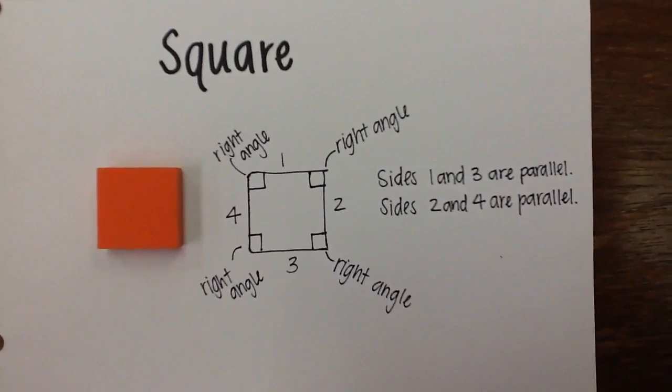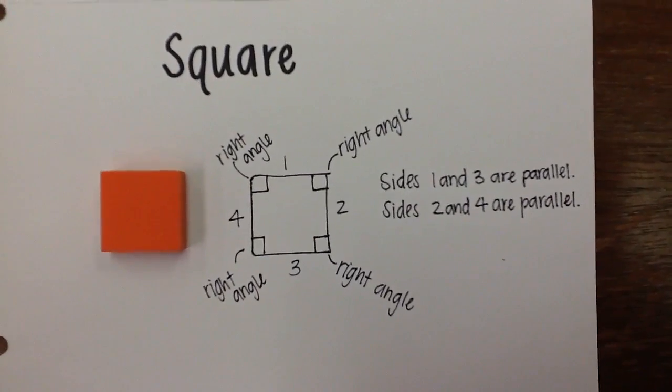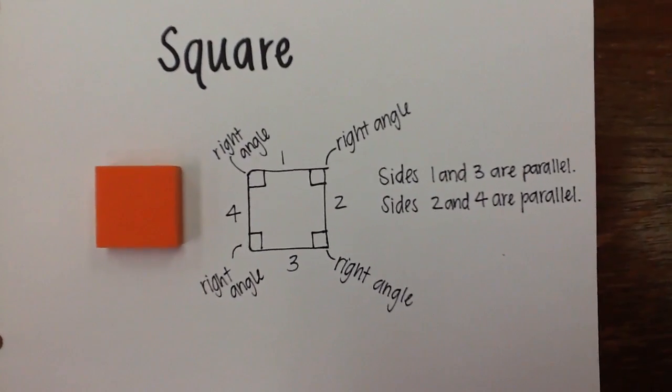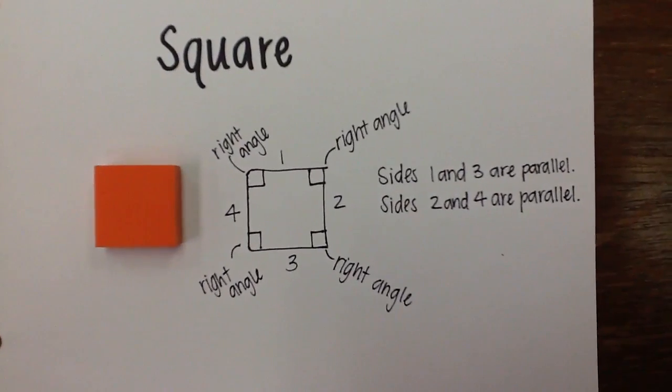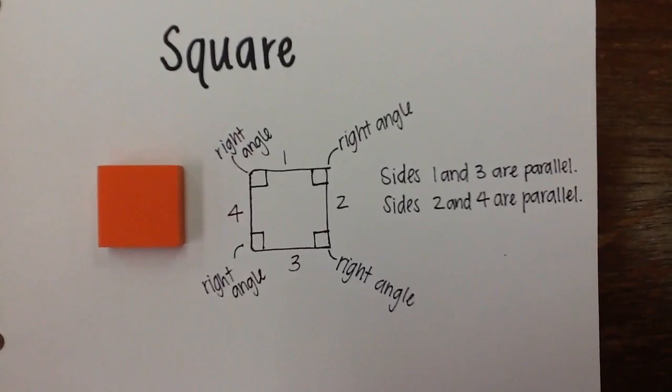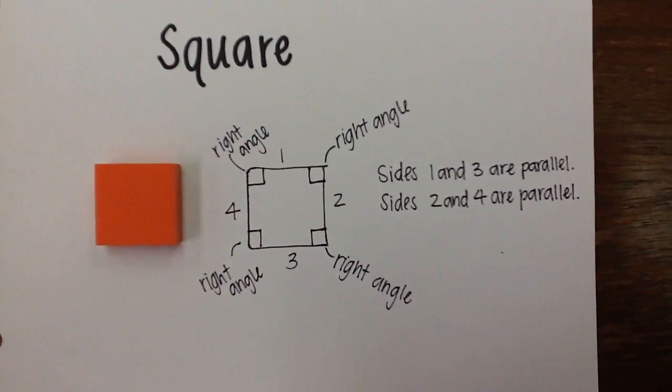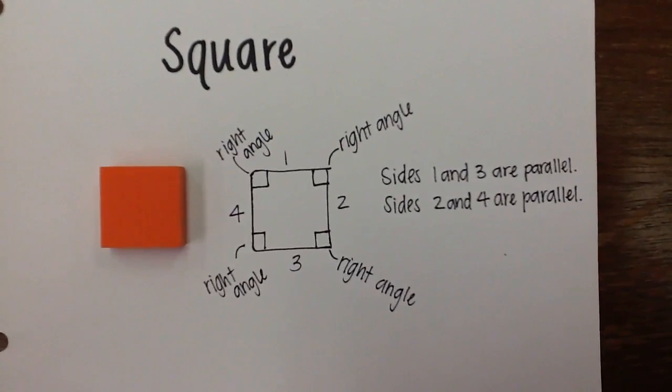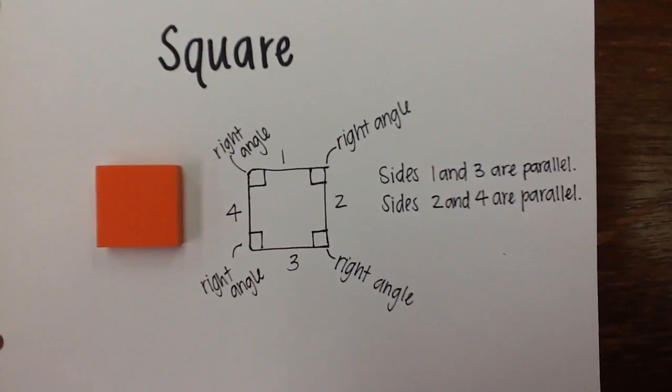The fourth shape is a square. It has four equal sides and every angle is a right angle. In the pattern blocks it is orange. The opposite sides are parallel.